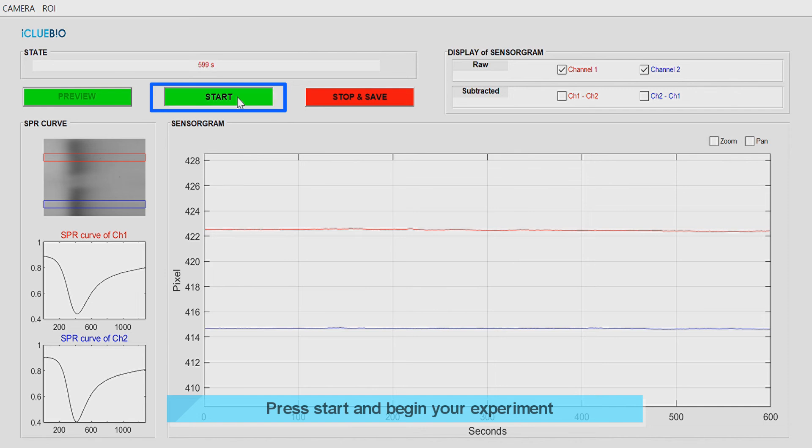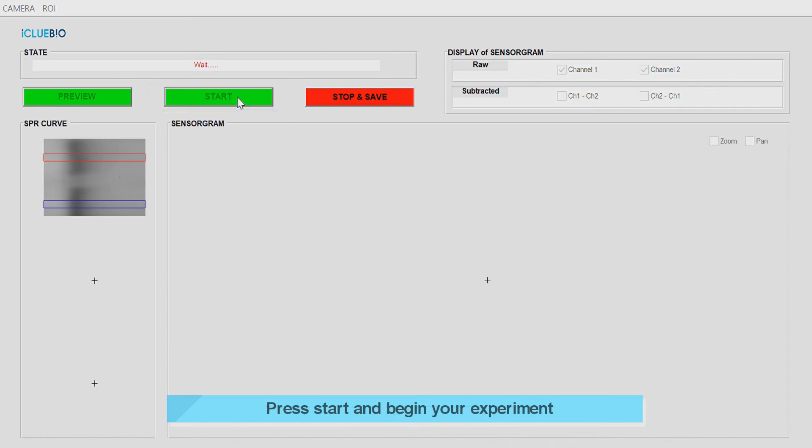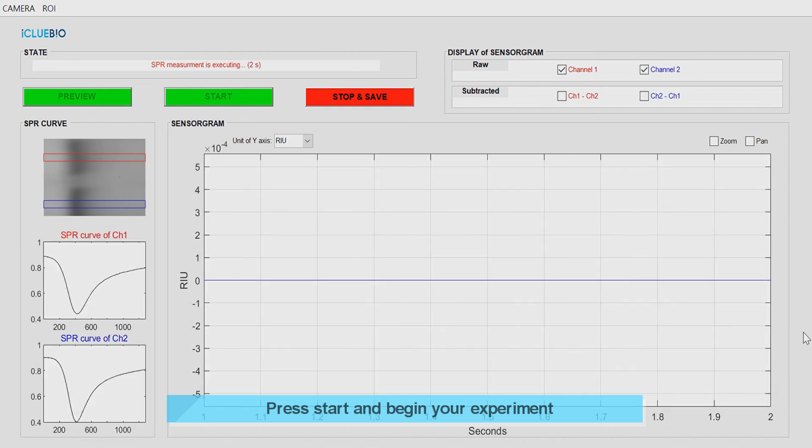When the signal is stable, now you are ready to go. Press the start button and select the saving folder. Then a sensorgram is shown on the screen and it is recorded in real time.